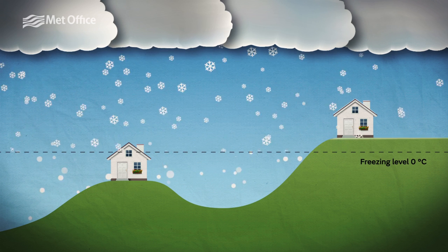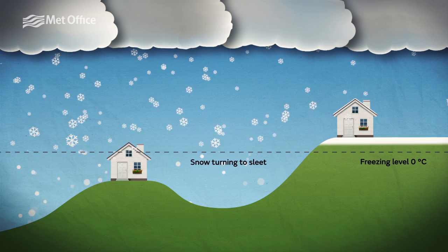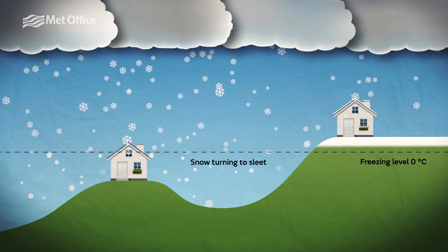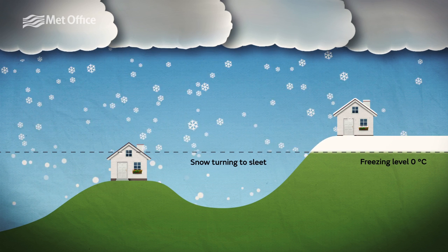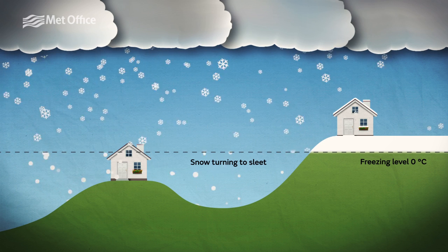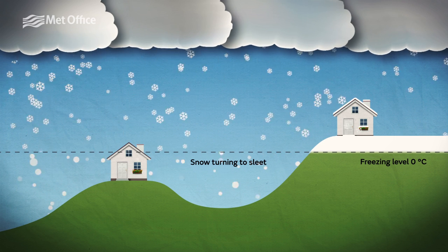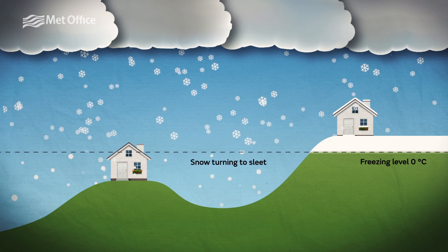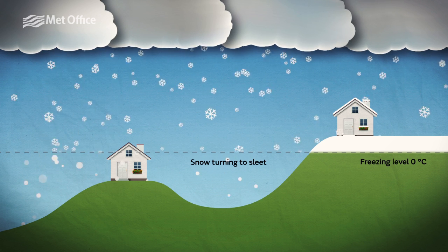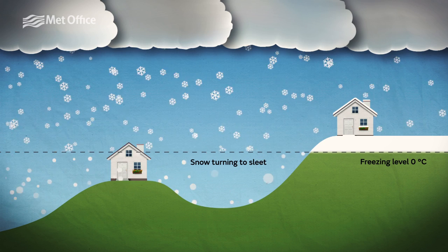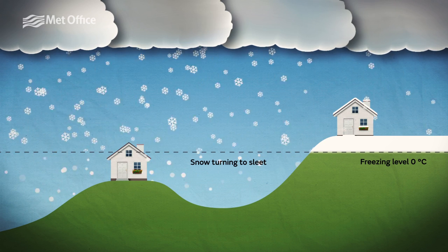The dotted line running across the diagram is the freezing level. This is the height above the ground where the temperature of the air drops to zero degrees. When snow falls beyond this level into the warmer air — i.e. above freezing — it starts to melt. The distance the snow has to travel before it reaches the surface will mean the difference between snow, sleet or rain at the ground level.